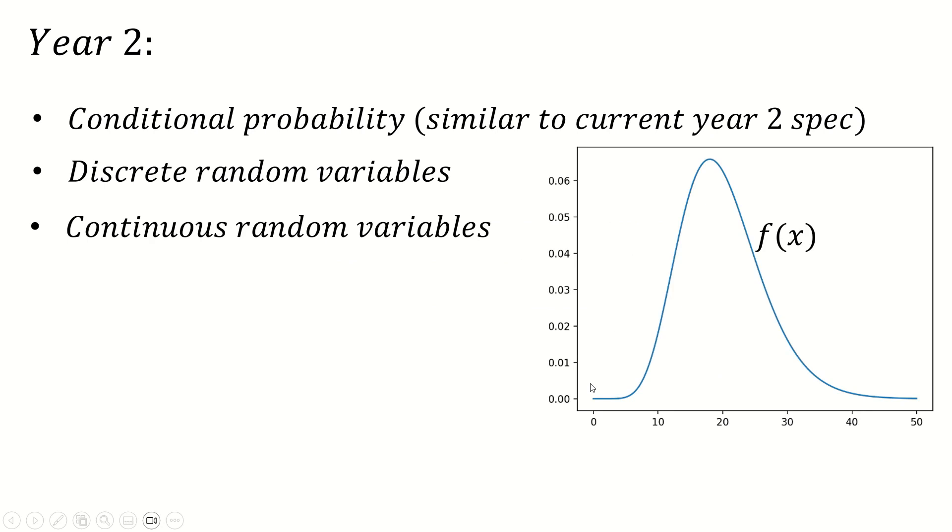Like if we integrate the continuous function here between the start point and the end point, we must get one because probability adds to one, which means of course, that if you're given a slightly ill-defined function, you can then use this fact to solve for the function. You can find some missing constant in it or something like that. You can also, of course, say what the probability of getting something in this case, maybe less than 30 is by just integrating up to 30 and finding the amount of area beneath it.